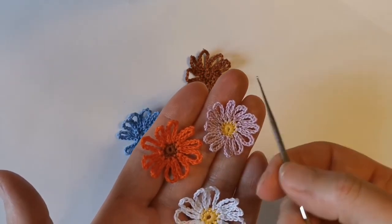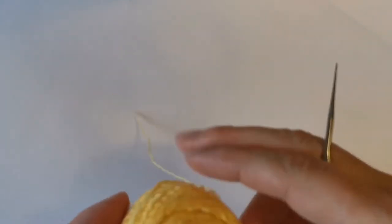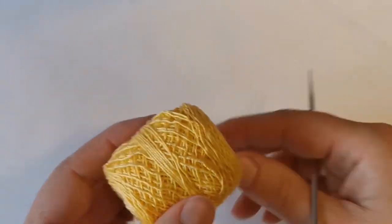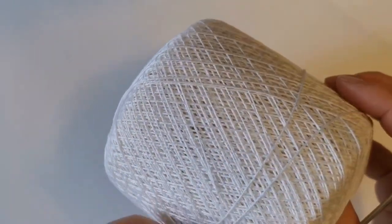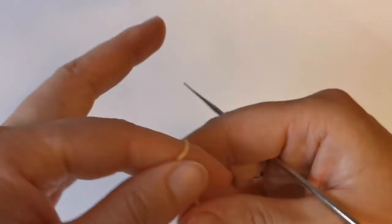To make this flower I will use yarn called Ankara number 12 for the core and yarn Lydia classic thread number 10 for the petals.